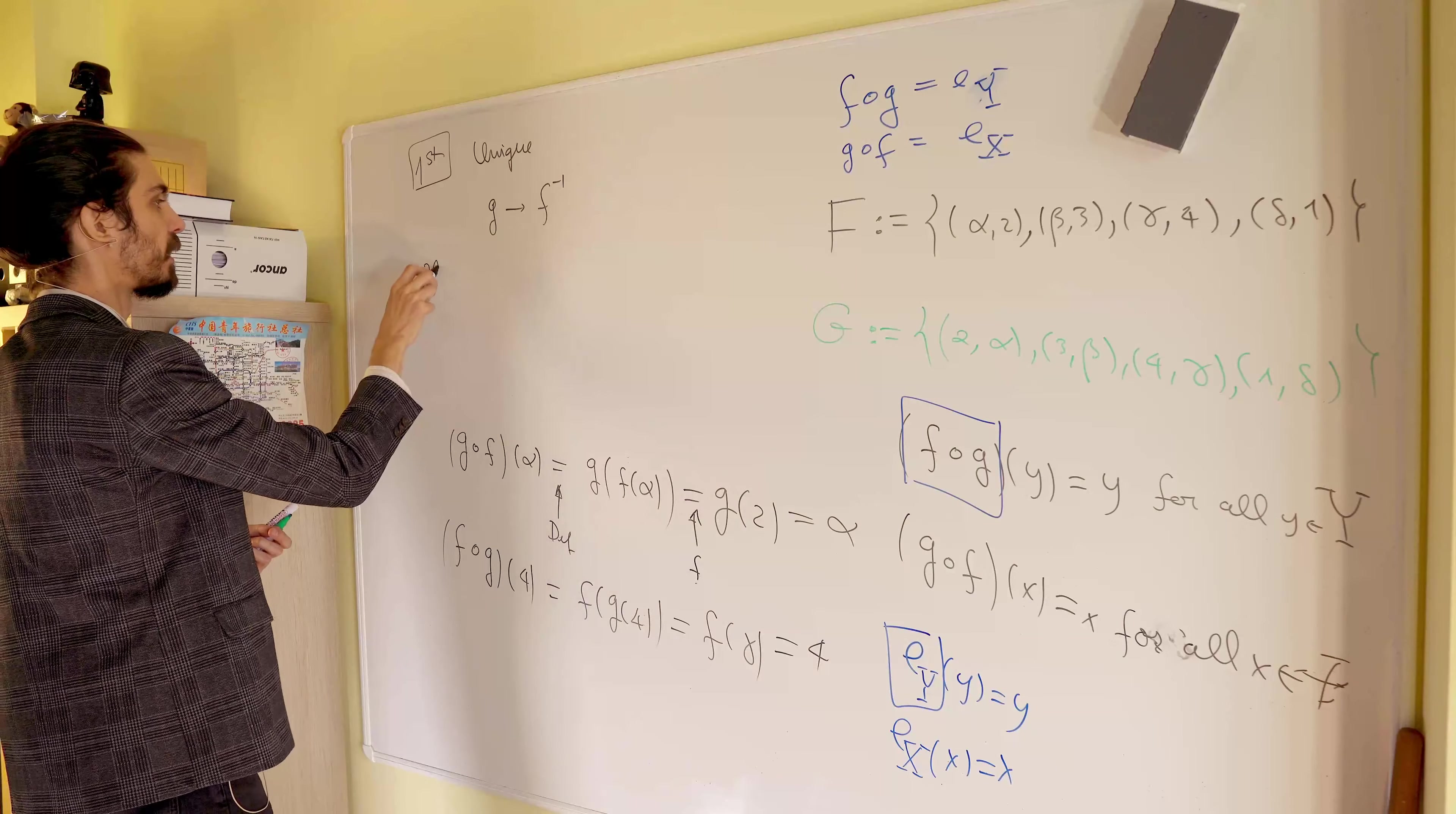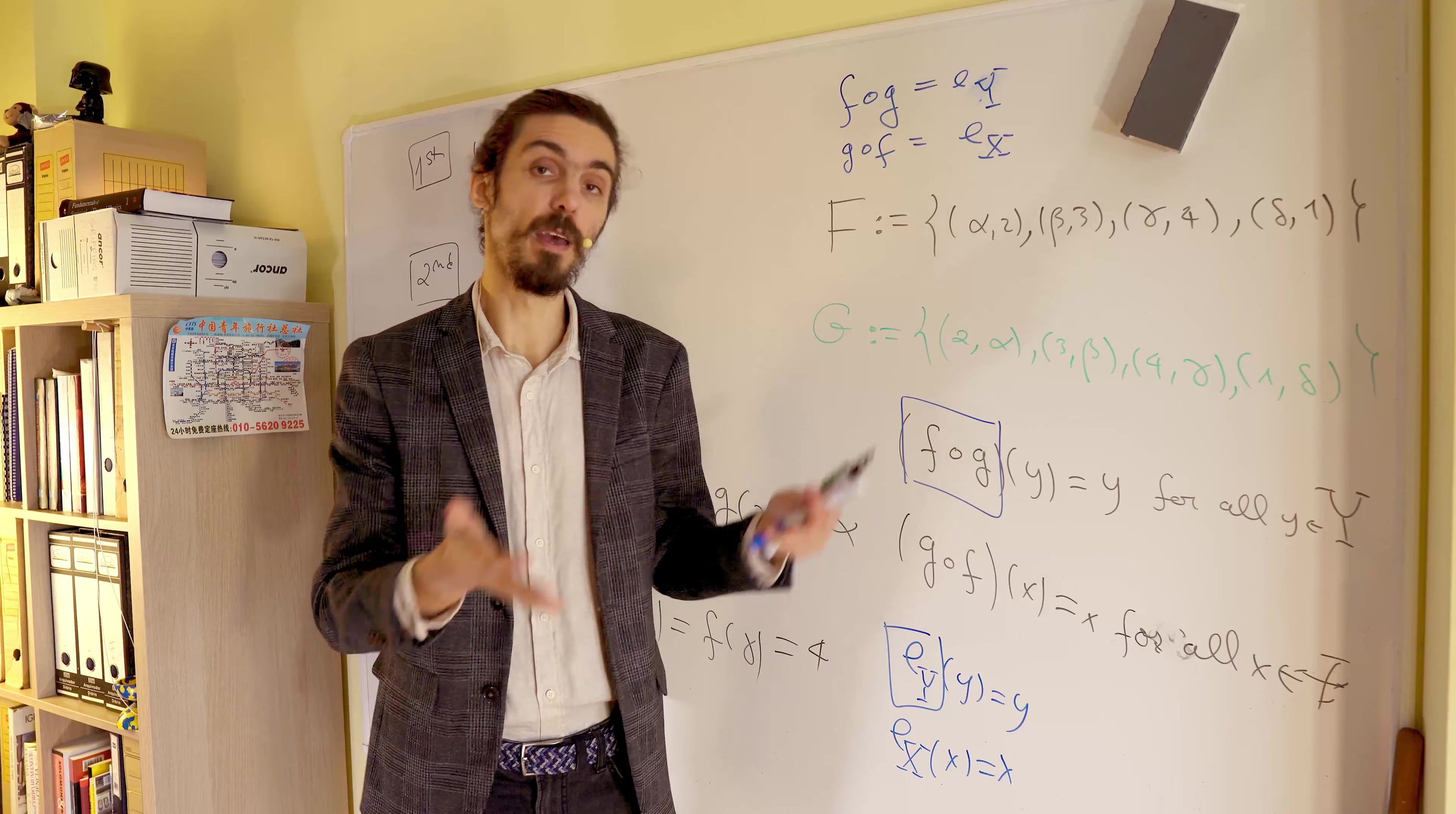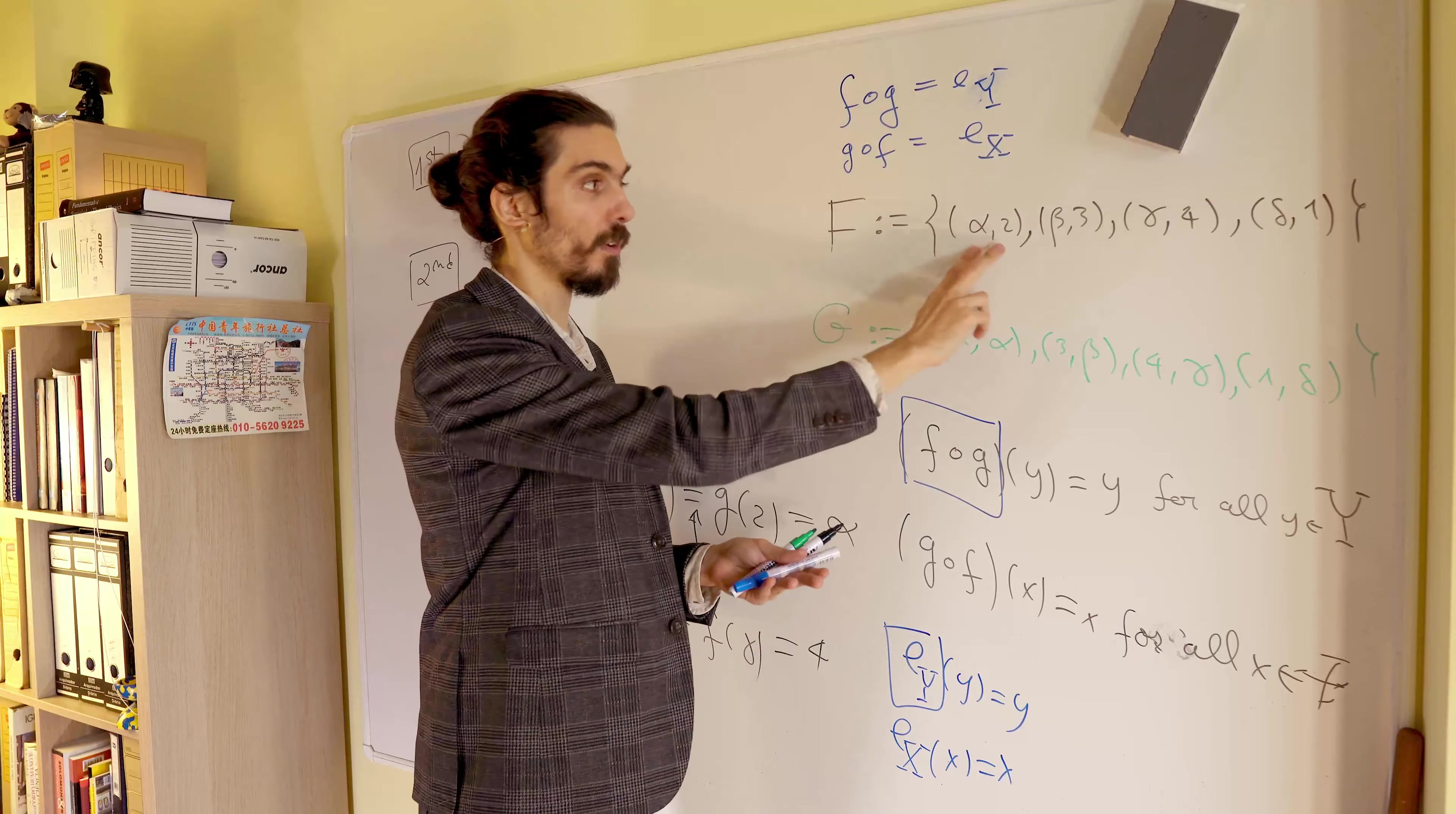So, this is a general thing. The second observation is as follows. We have our functions gave explicitly. We have the diagram in front of us, the f diagram, and we also add the list of ordered pairs. And if you have those things explicitly, then it's easy to find the inverse. You just flip either the arrows or the entries.